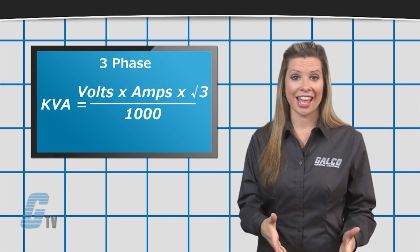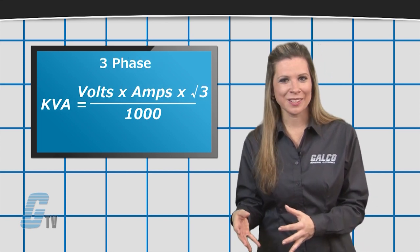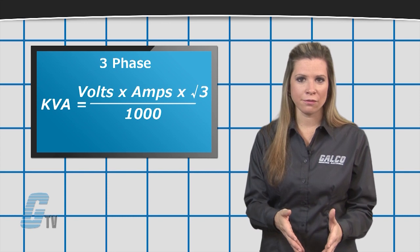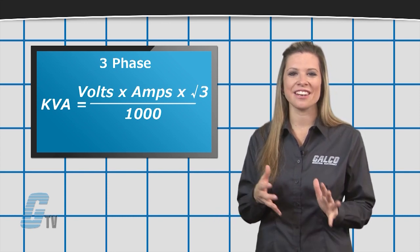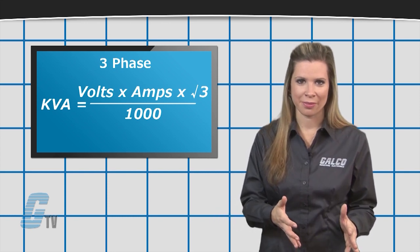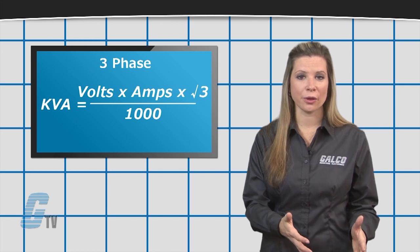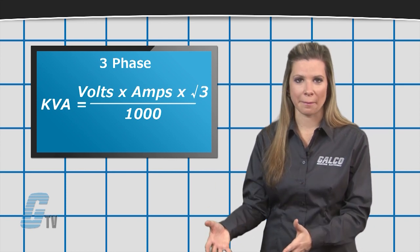To find the KVA in three phase, I will need to multiply the line-to-line voltage with the line current, and then divide this by 1000. I will then multiply this value by the square root of 3.